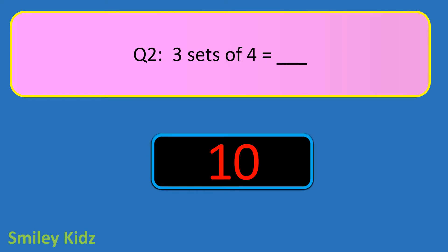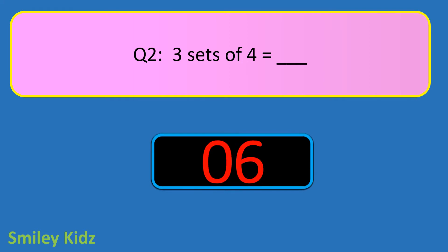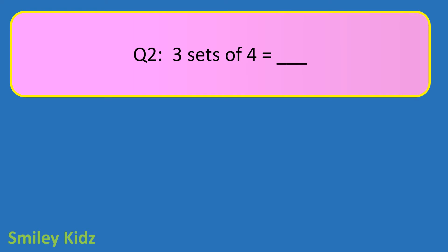Question number 2. 3 sets of 4 is equal to blank. Your time starts now. And your time is up. The right answer is 12. 3 sets of 4 is equal to 12, because 3 times 4 is equal to 12.